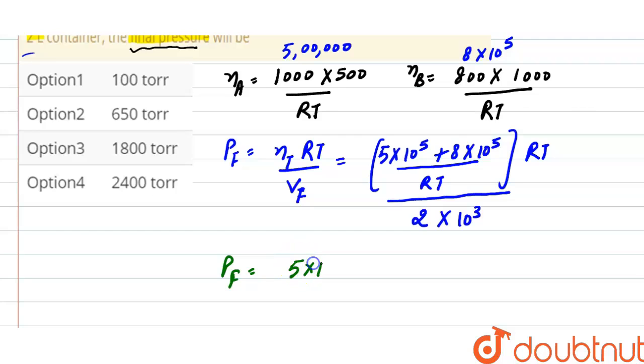5 into 10 raised to the power 5 plus 8 into 10 raised to the power 5, divided by total volume, that is 2000. And from here, final pressure will be 650 torr, and the correct option here is option 2.